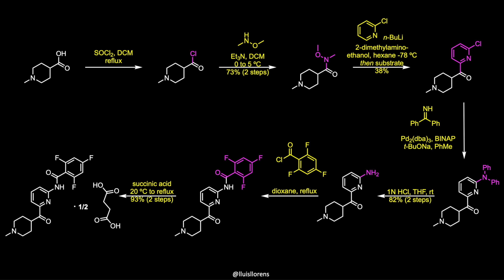Finally, amidation with this benzoyl chloride, followed by subjection to succinic acid, furnishes lasmiditan as the hemisuccinate salt in excellent yield over two steps.